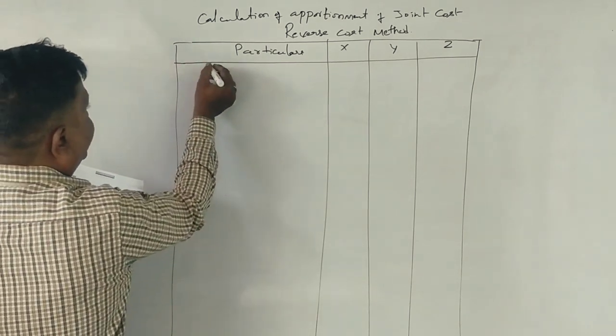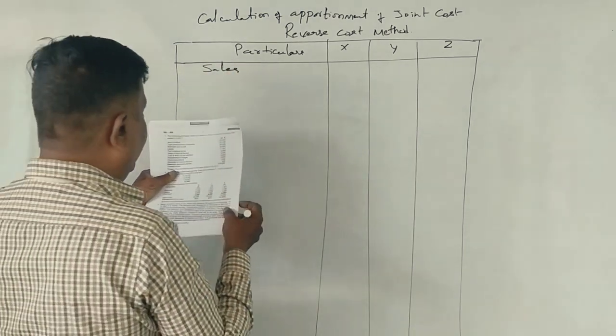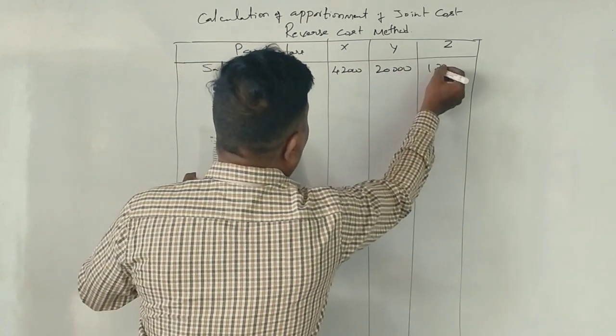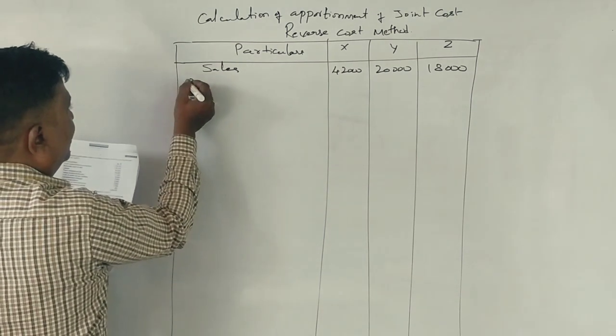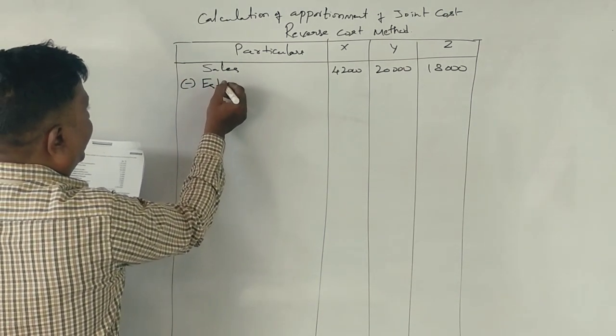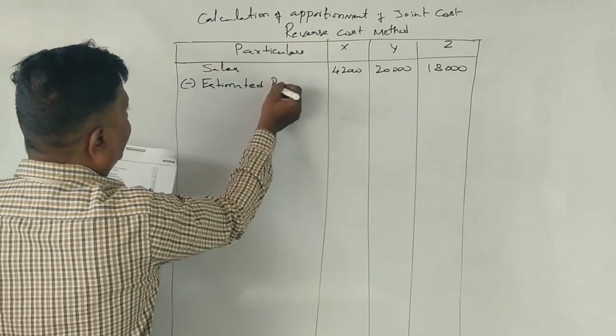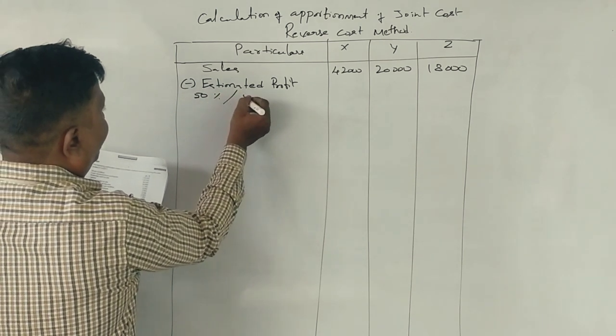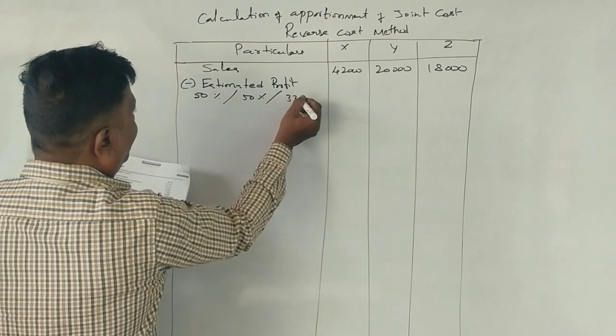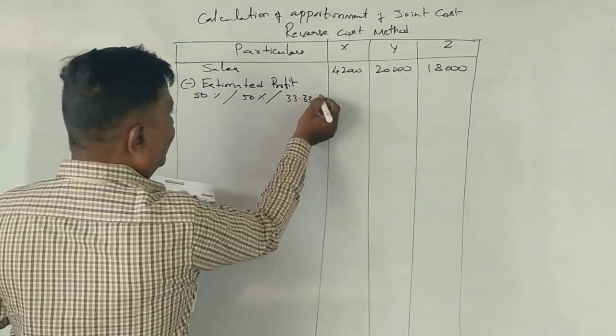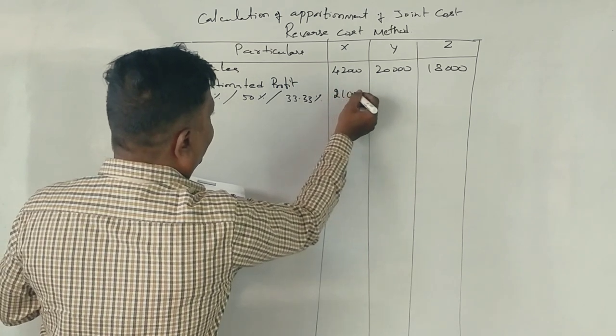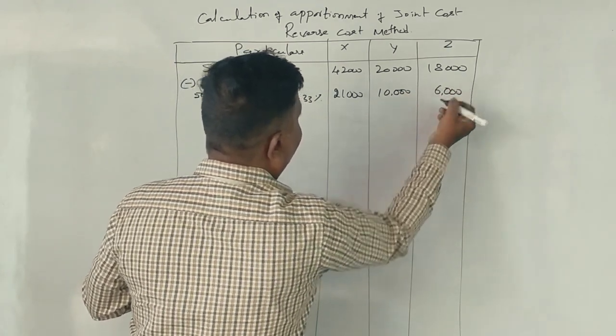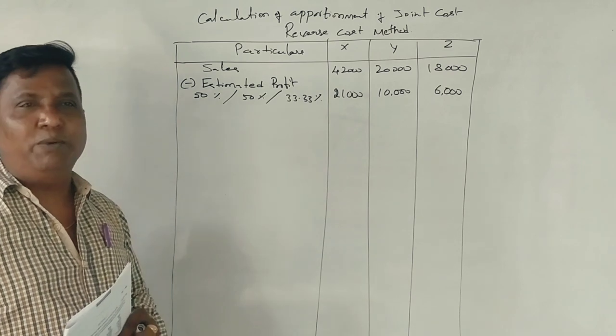Here's X, Y, Z. This is particulars. Now, reverse cost method. First of all, sales. What is the sales amount is 42,000, 20,000, 18,000. In this, we have to minus estimated profit.